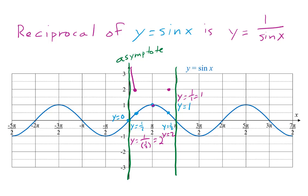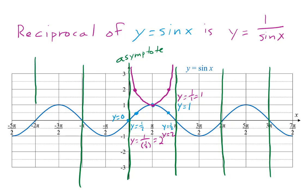We can sketch a curve through these three points approaching the asymptotes. This curve looks a little bit like a parabola, but it is not actually a parabola — parabolas don't have asymptotes. There are asymptotes in every place where the sine curve has a y value of 0. Between these asymptotes, we get more of these u-shaped curves. Here's another point where y equals 1, so the reciprocal is also y equals 1. There are two more points for the y of 1 half, and the reciprocal there is 2. We can sketch a curve through these points approaching the asymptotes, and it looks just like the first one. We have one of these u-shaped curves every time the sine curve has an upper peak.